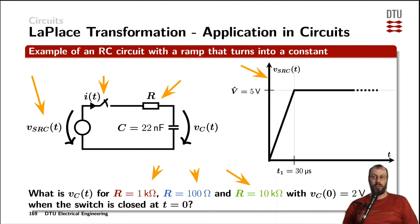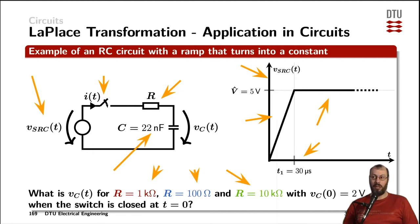The source is going to charge a 22 nanofarad capacitor through the resistor when the switch closes, but we're not applying a step function to it. We are applying first a ramp that turns later on into a constant. We also have some timing here — the ramp turns into a constant after 30 microseconds and the voltage is peaking at 5 volts.